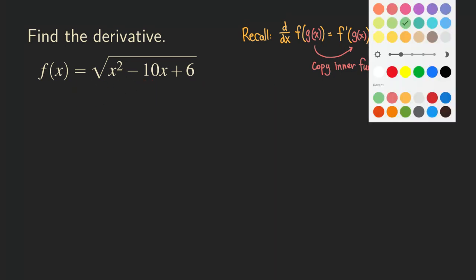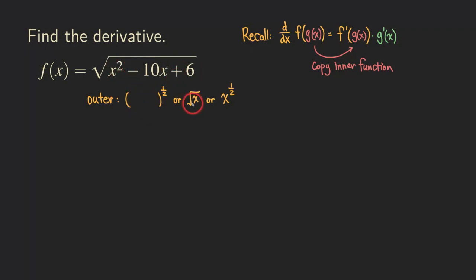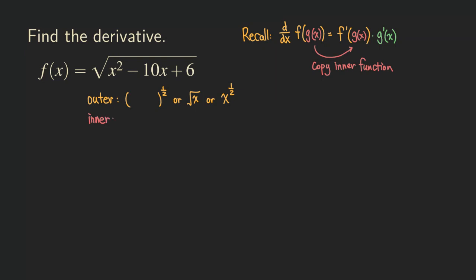So let's get started on this problem. First, let's write down our outer function. Our outer function is the square root — so it's really just the square root. You can think of it as something to the one-half power, or simply write it as the square root of x, or x to the one-half power. I'll use a blank to indicate that instead of putting x there, I need to put in the inner function. So that's my outer function. The inner function is x squared minus 10x plus 6.